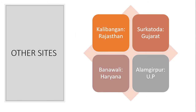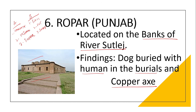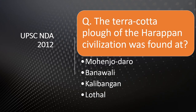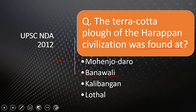Other important Indus Valley sites include Kalibanga in Rajasthan, Sarkathoda in Gujarat, Banawali in Haryana, and Alamgirpur in UP. In UPSC NDA 2012, the question on where the terracotta plough of the Harappan civilization was found has the answer: Banawali, Haryana.